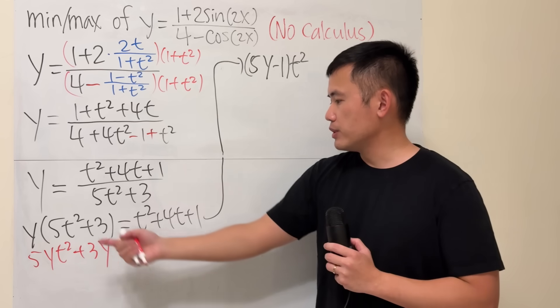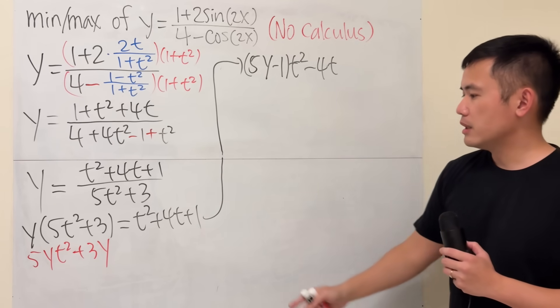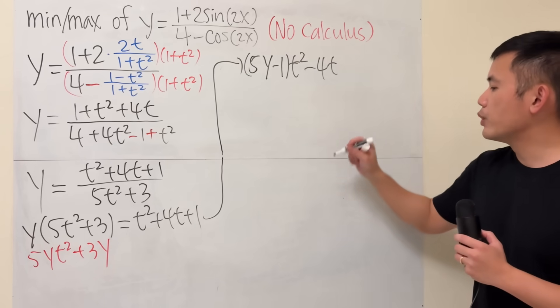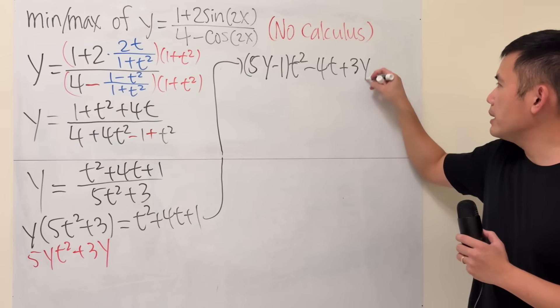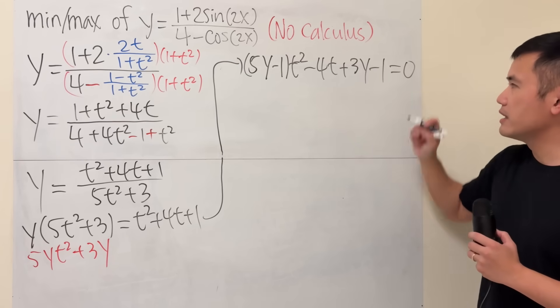Continue. Put this to the other side. That's minus 4t. And then subtract 1 to both sides. We will have plus 3y minus 1. And all that is equal to 0.